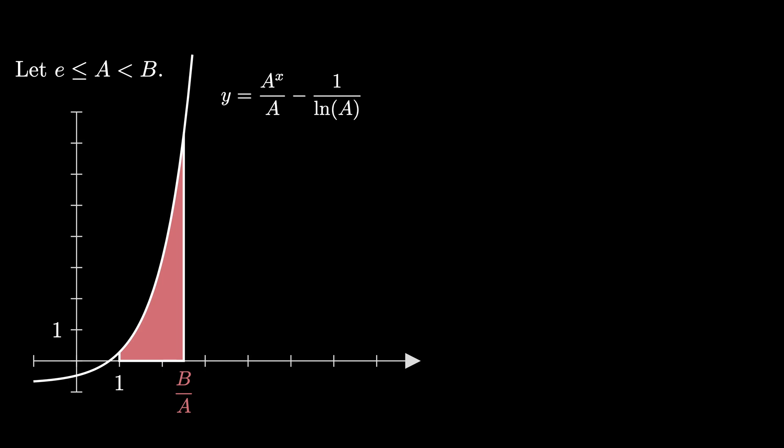The area under the curve is given by the definite integral from 1 to b over a of a to the x divided by a minus 1 over the natural log of a dx. And as noted, this definite integral is greater than 0.